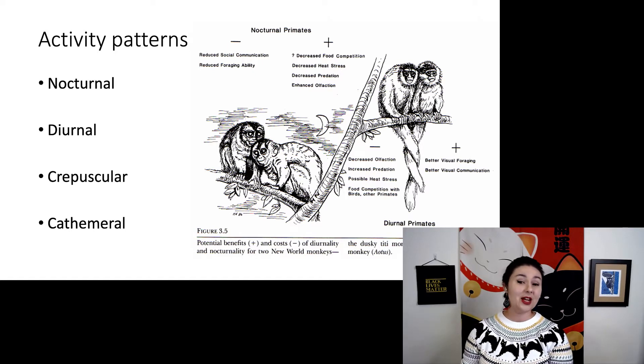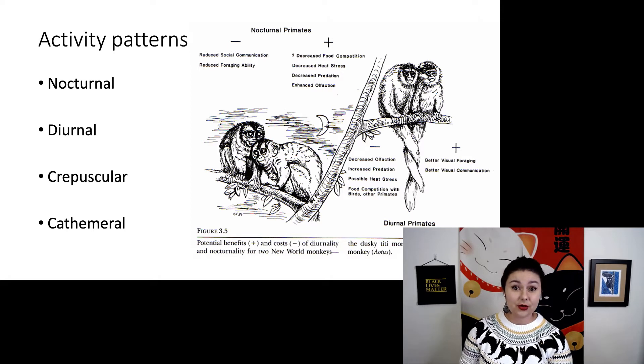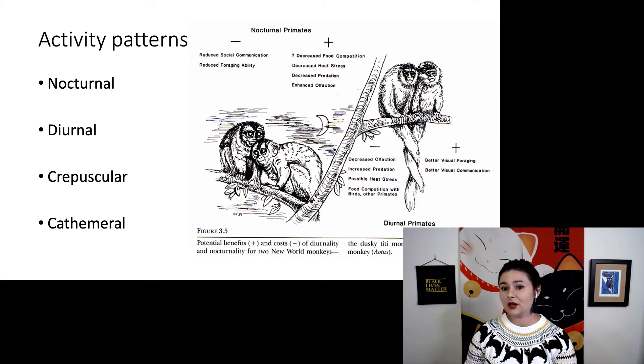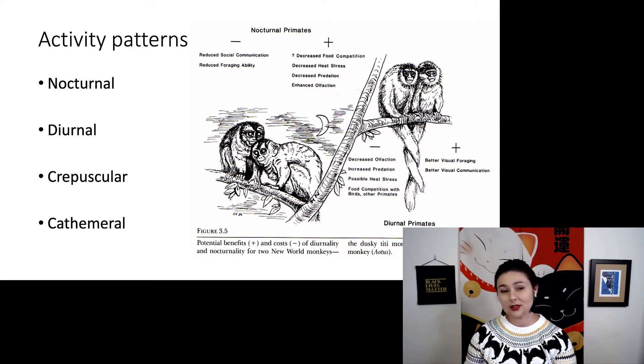There's some benefits and cons to all of these strategies. If you're a nocturnal primate, it's harder for you to have social communication. There's not as much light, and it's harder for you to just find anything. However, there aren't as many species active at night. You have reduced food competition. You don't have to worry about heat stress. There aren't as many predators because just not as many things are awake. And you actually have increased olfaction.